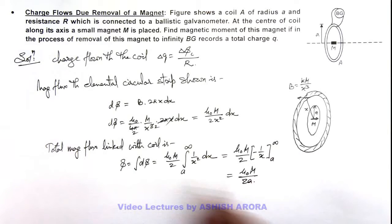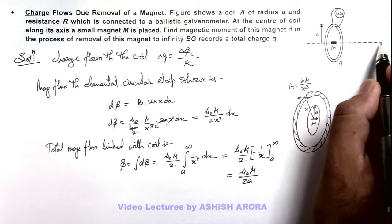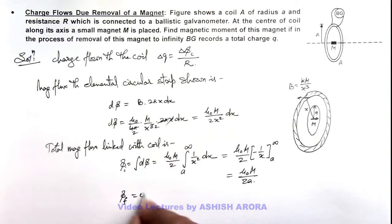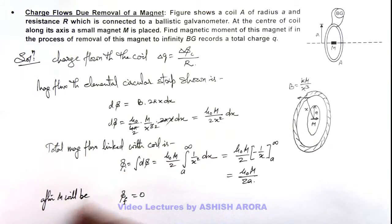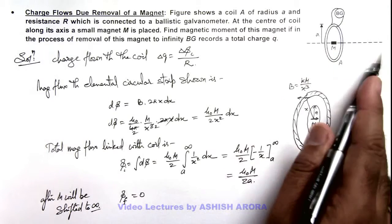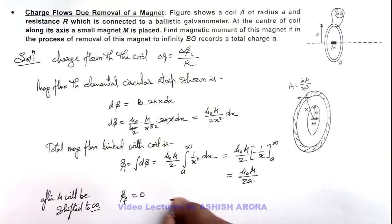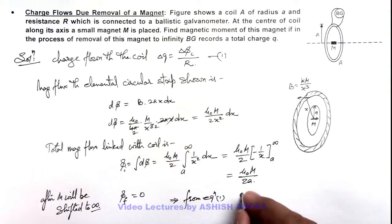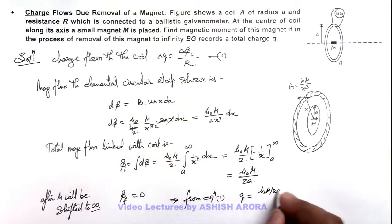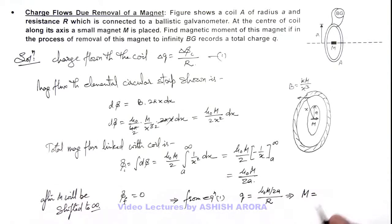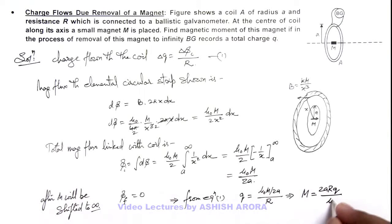So if this is the total magnetic flux linked with the coil, then when the magnet is removed to infinity, the initial magnetic flux is μ₀m/2a and the final magnetic flux reduces to zero, since the magnetic dipole is shifted to infinity. From equation 1, the total charge flowing is q = (μ₀m/2a) / r. Solving this expression, the magnetic moment is given as m = 2aRq / μ₀. That is the answer to this problem.